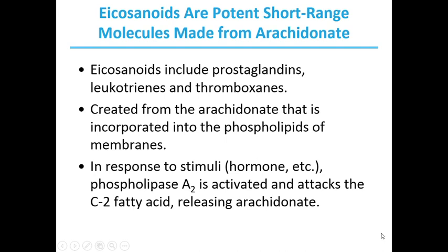Eicosanoids are a family of very potent biological signaling molecules that act as short-range messengers affecting tissues near the cells that produce them. Eicosanoids include prostaglandins, leukotrienes, and thromboxanes. These molecules are created from arachidinate that is incorporated in the phospholipids of membranes. In response to hormonal or other stimuli, phospholipase A2, present in most types of mammalian cells, attacks membrane phospholipids, releasing arachidinate.